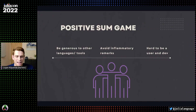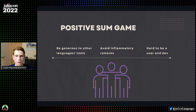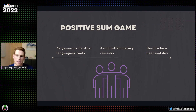Keeping things positive in general is going to be to your advantage. If you talk about other languages and ecosystems in a negative way, nobody really wins. You're not going to convince somebody that they should use Julia by saying 'Hey, the thing you're using sucks and you shouldn't be using it.' That's just not an effective way of communicating with other people. So keep that in mind.